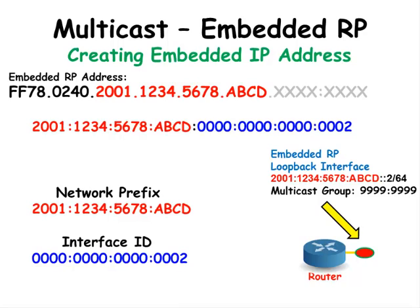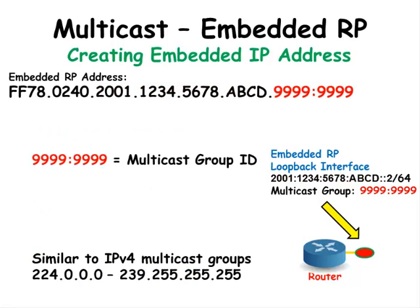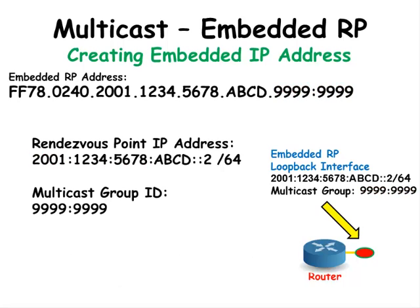Now we will put the network prefix inside of the embedded Rendezvous Point IP address. And lastly, we will add the multicast group ID of all 9s to the end of the embedded Rendezvous Point IP address.